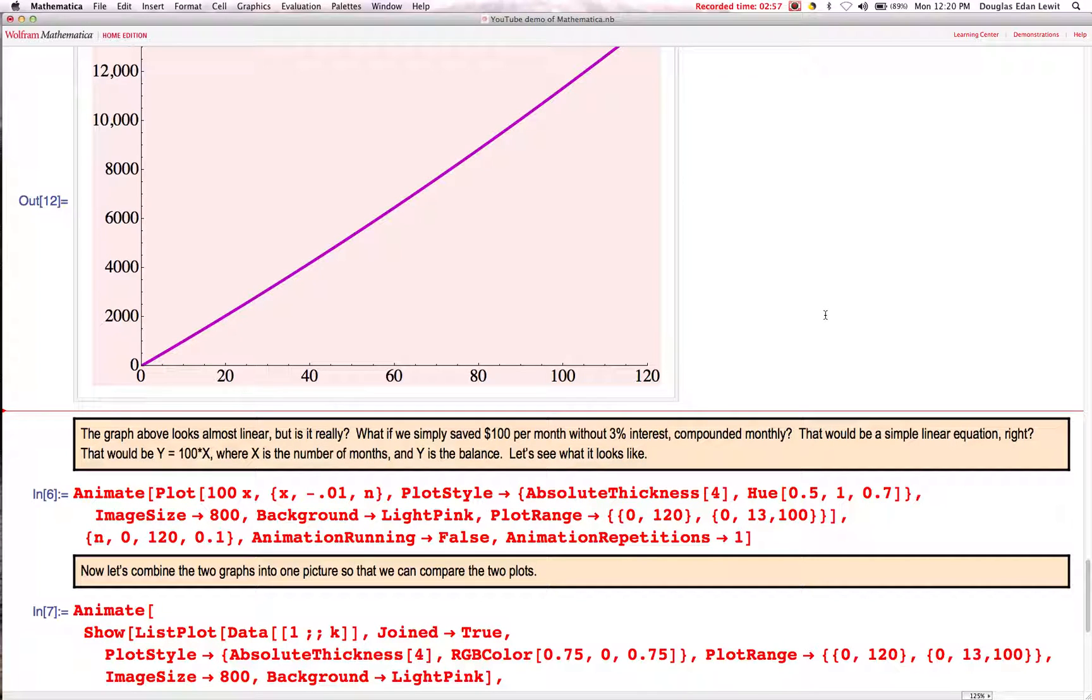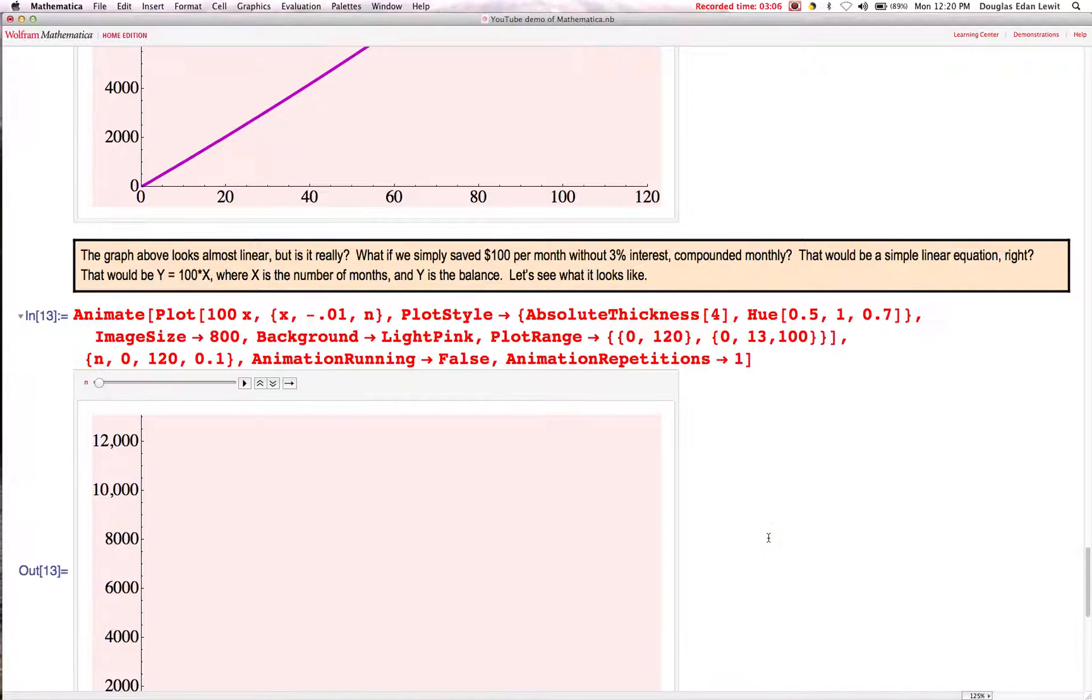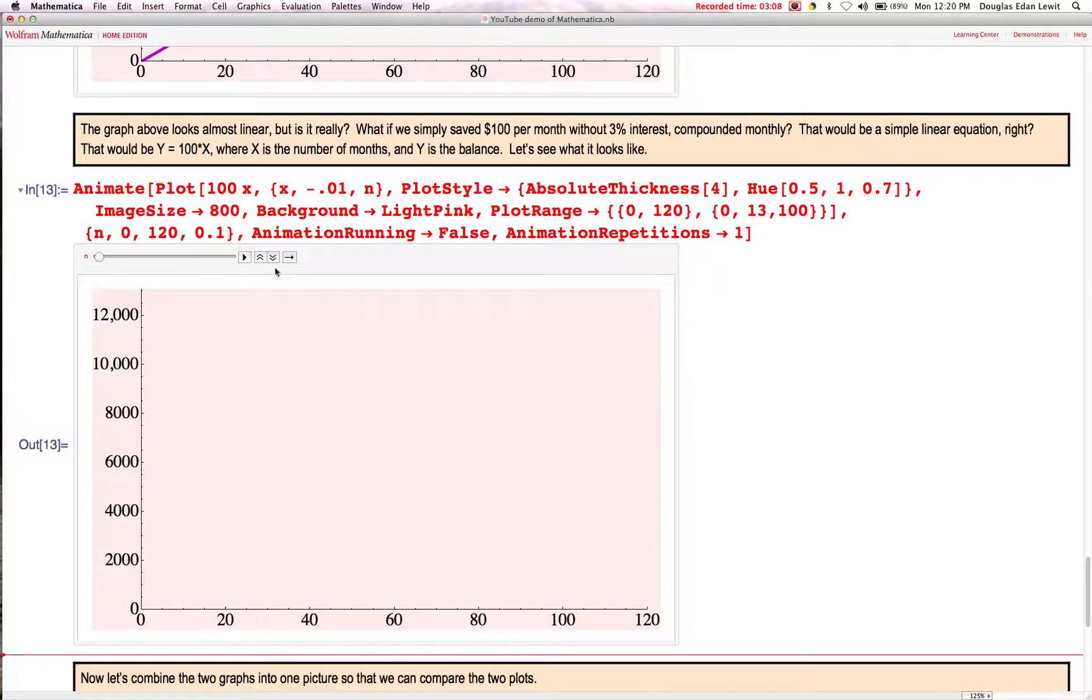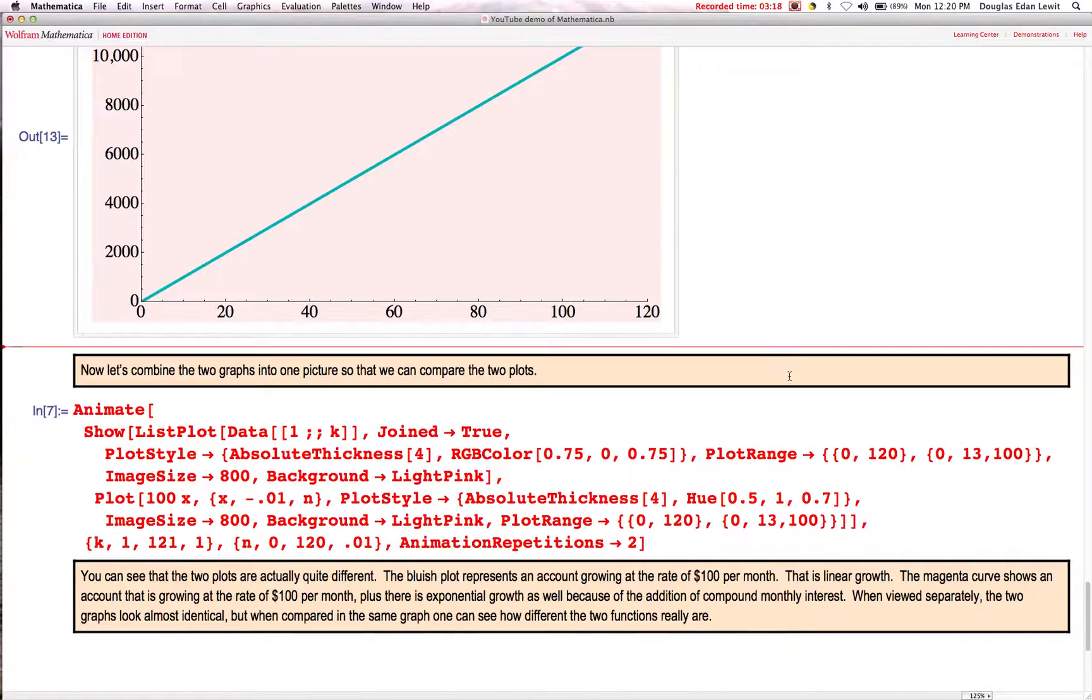Let's say you're saving $100 a month without 3% interest. What would that look like? That would be y equals 100x. And that's going to look like this. That line is turquoise. That's my turquoise line. What are the lines going to look like? What are the curves going to look like when I combine them into one picture?